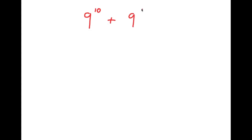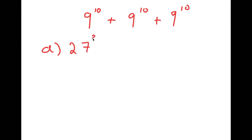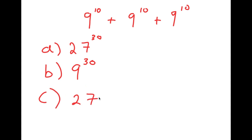In this video, I'm going to be solving the problem 9 to the power of 10 plus 9 to the power of 10 plus 9 to the power of 10. For this problem, I have four answer choices: A is 27 to the power of 30, B is 9 to the power of 30, C is 27 to the power of 10, and D is 3 to the power of 21.